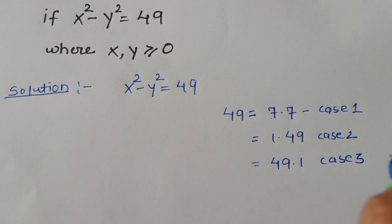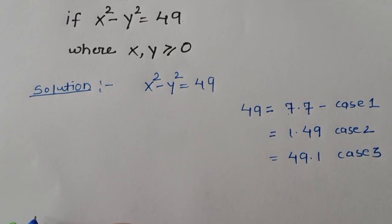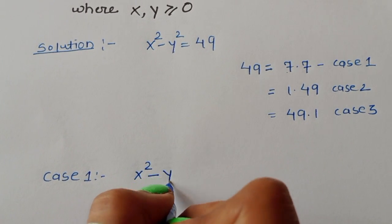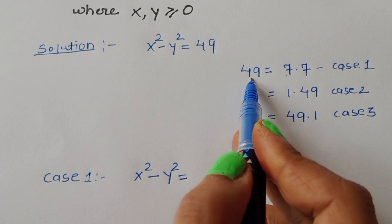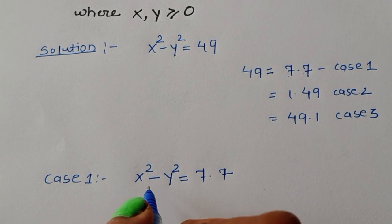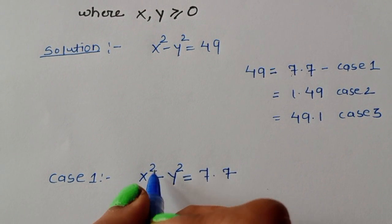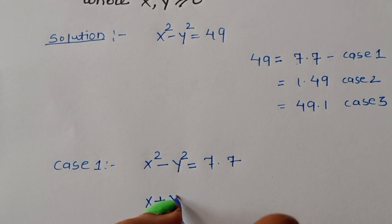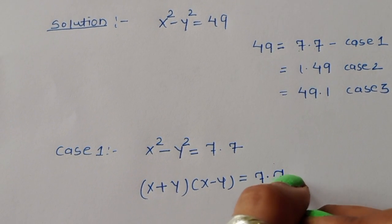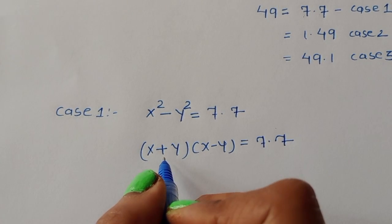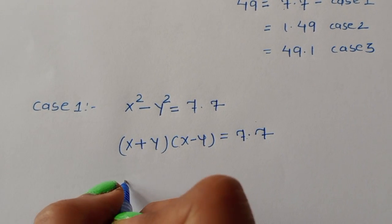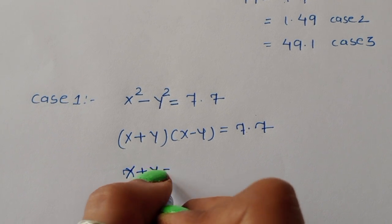Now we solve one by one. Case 1: x² - y² = 49, and the factor of 49 is 7 × 7. We can write x² - y² as (x + y)(x - y) = 7 × 7. Comparing LHS and RHS, we get two equations: x + y = 7 and x - y = 7.